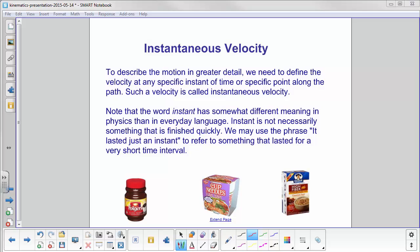So to describe this motion in greater detail, we need to get the velocity at any specific instant of time or specific point along the path. We are going to call this velocity instantaneous velocity. Now again, words in physics don't always mean what they do in your other life. For example, in everyday language, you can have instant coffee, instant noodles, instant oatmeal. We may use the phrase, it lasted just an instant, to refer to something that lasted for a very, very short time interval or something that was finished quickly.